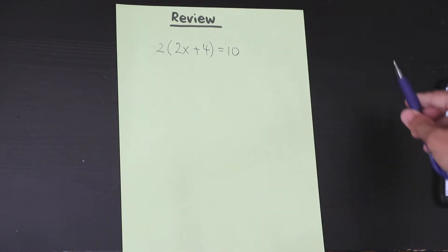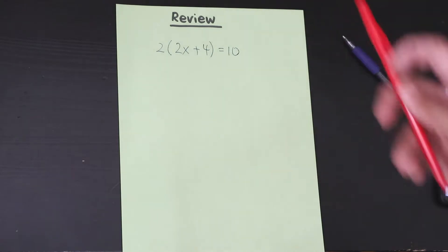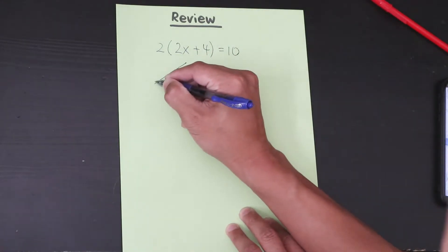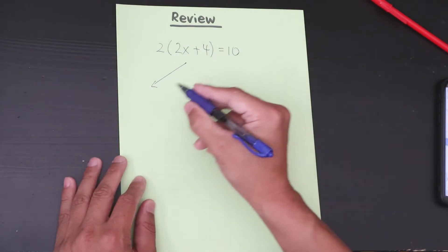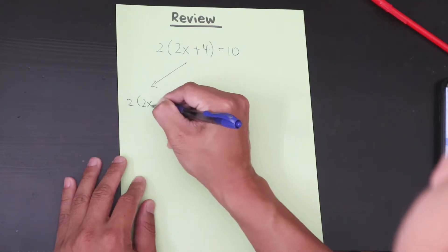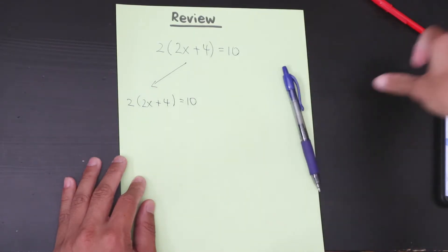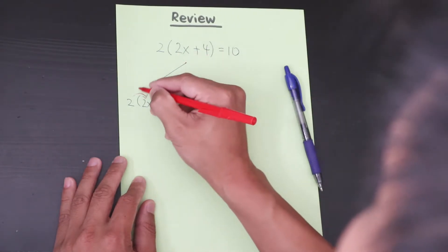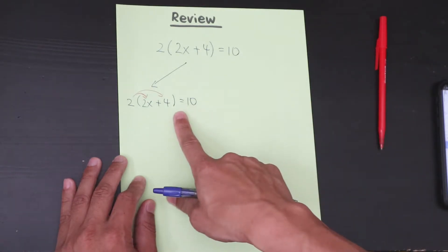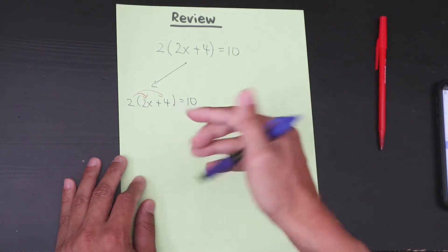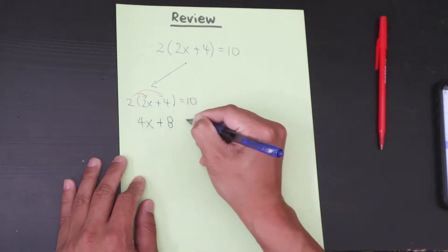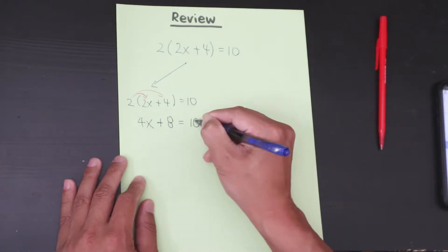There are actually two ways to do this. Method one: you distribute. So if I rewrite this equation, I distribute the 2 to the 2x and the positive 4 inside. So 2 times 2x is 4x, and 2 times positive 4 is positive 8. So you get 4x plus 8 equals 10.